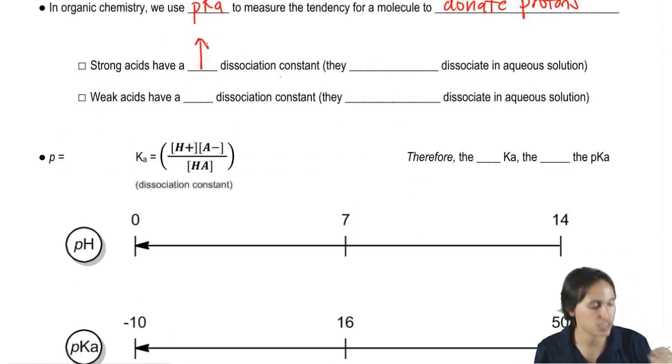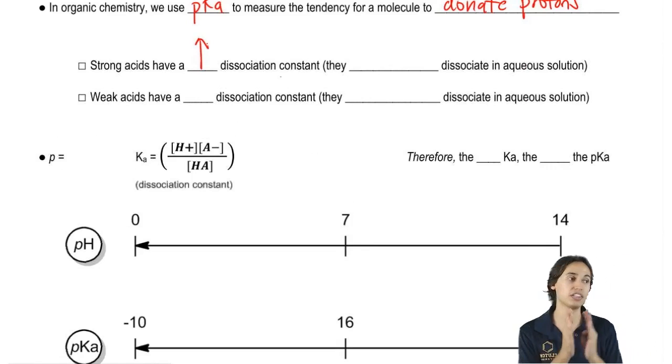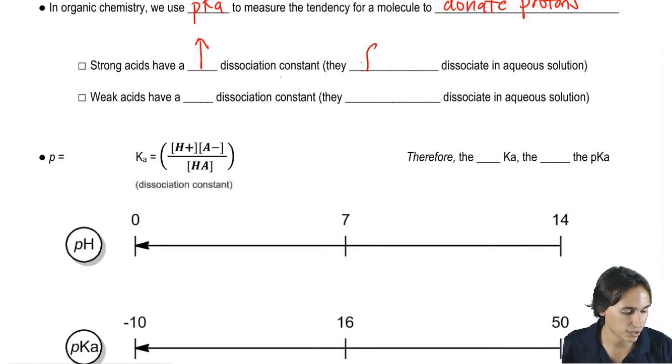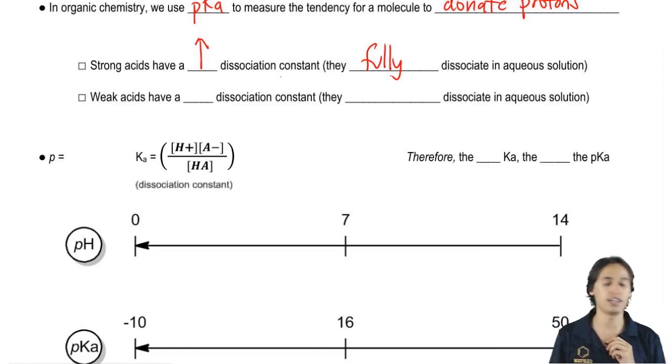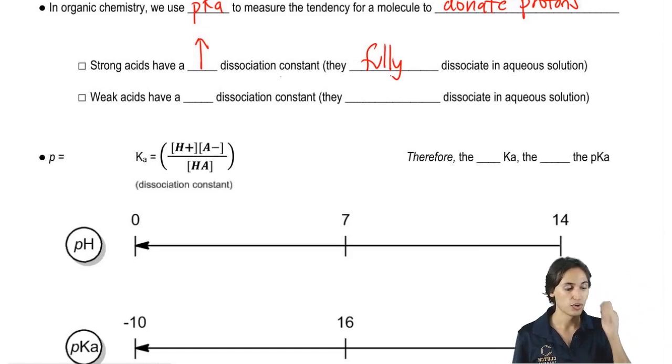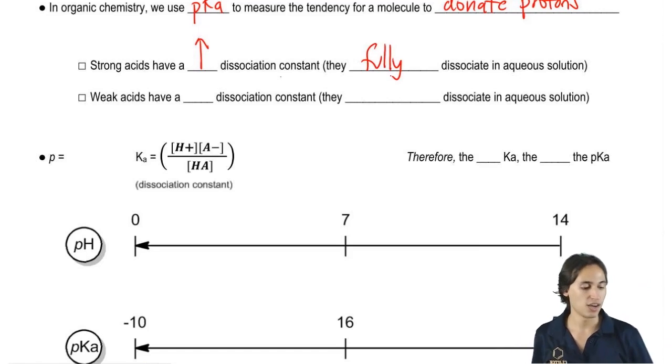Let's just talk about stuff that you guys should remember. Strong acids are going to have a high dissociation constant. That means that they're very likely to dissociate fully, and they fully dissociate in an aqueous solution.